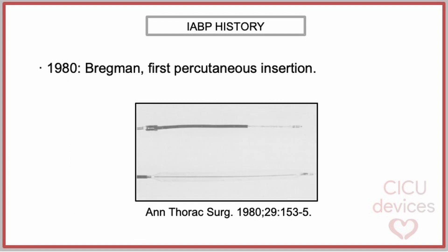In 1980, Bregman published a modification of the previous intra-aortic balloon pump. By using a wire and wrapping the membrane, it could be introduced using the Seldinger technique through a 12 French introducer and placed in the thoracic aorta to initiate counterpulsation. The possibility of percutaneous catheter insertion significantly increased clinical use up to the present day.